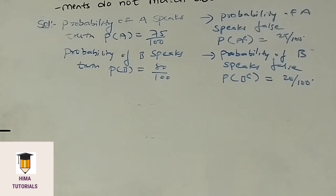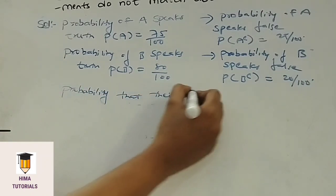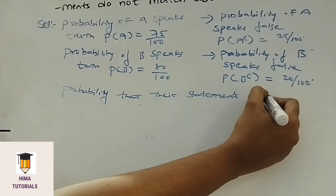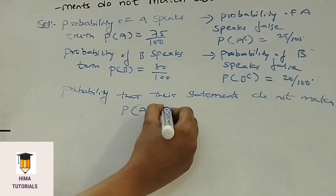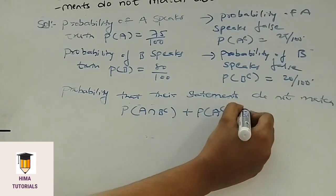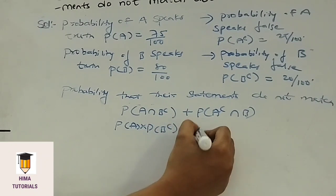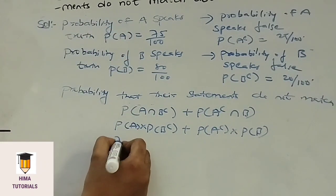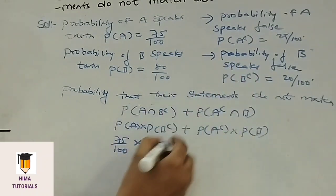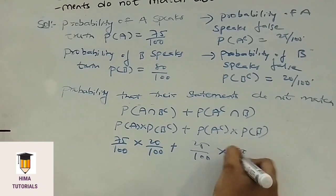What they asked us to find is the probability that their statements do not match about an incident. Probability that their statements do not match equals P of A intersection B complement plus P of A complement intersection B. That means P of A into P of B complement plus P of A complement into P of B. P of A is 75 by 100 and P of B complement is 20 by 100. P of A complement is 25 by 100 and P of B is 80 by 100.